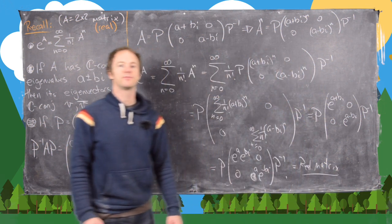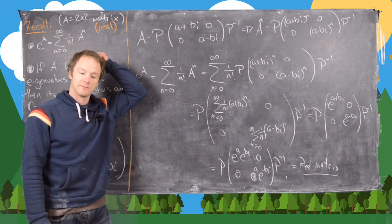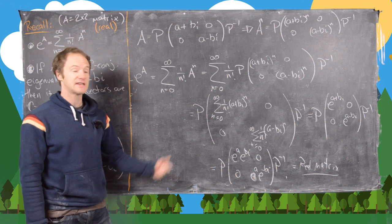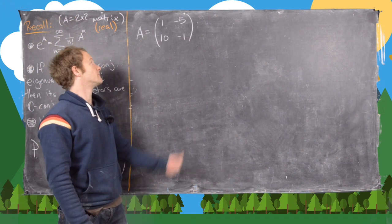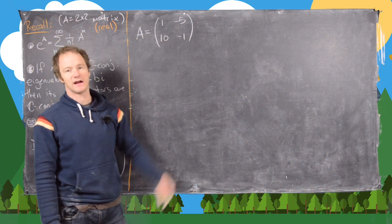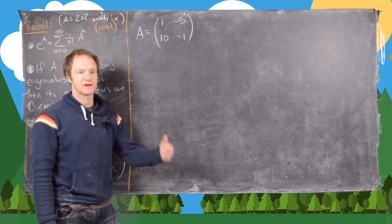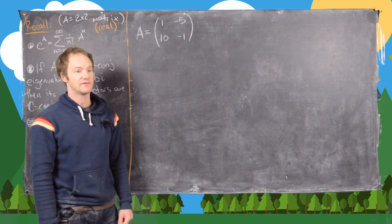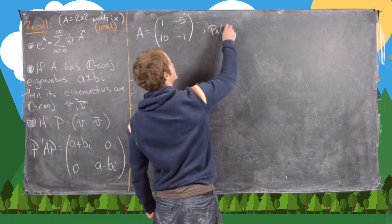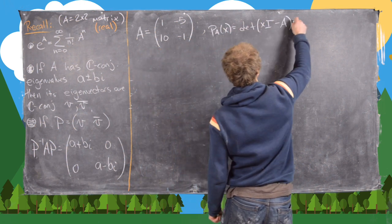You can certainly prove that, but the details are a bit technical, so instead we'll look at an example. Our example matrix A is the 2x2 matrix with entries one, negative five, ten, negative one. We need to find the characteristic polynomial of A first, then find its eigenvalues and eigenvectors to compute its matrix exponential. The characteristic polynomial is the determinant of X times I minus A.